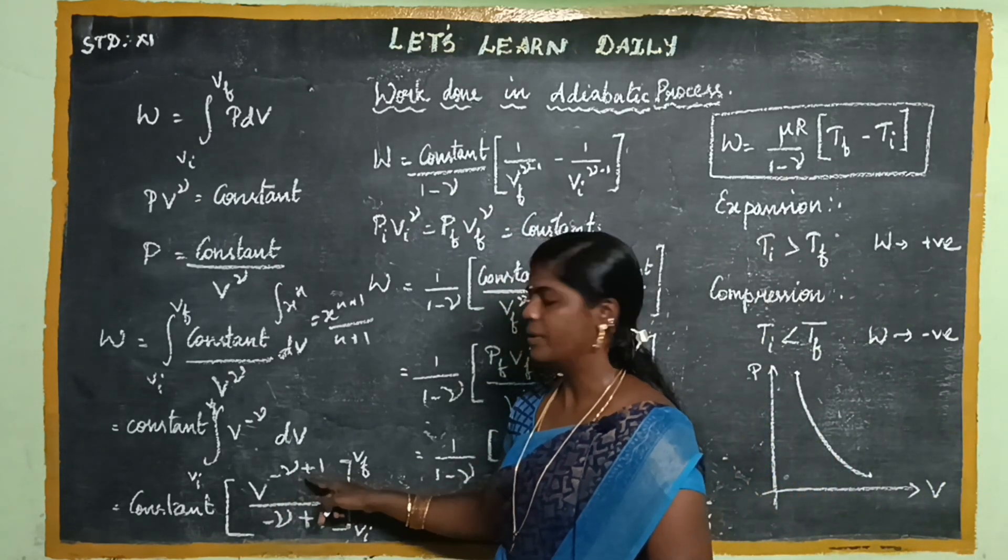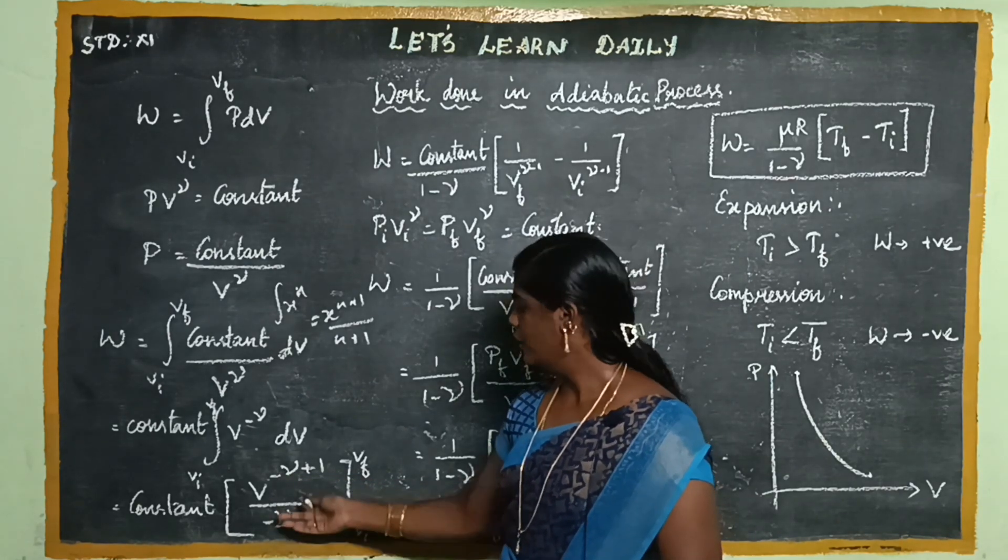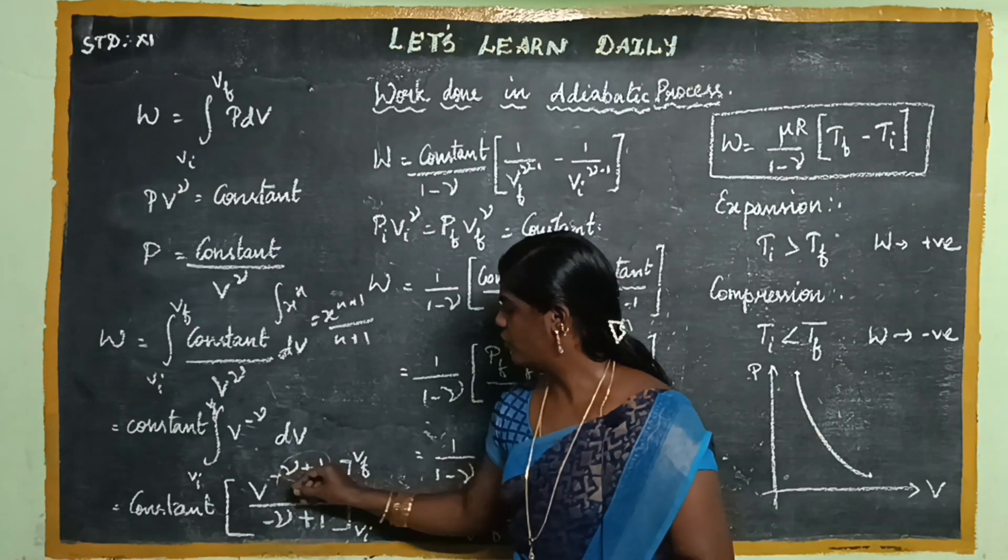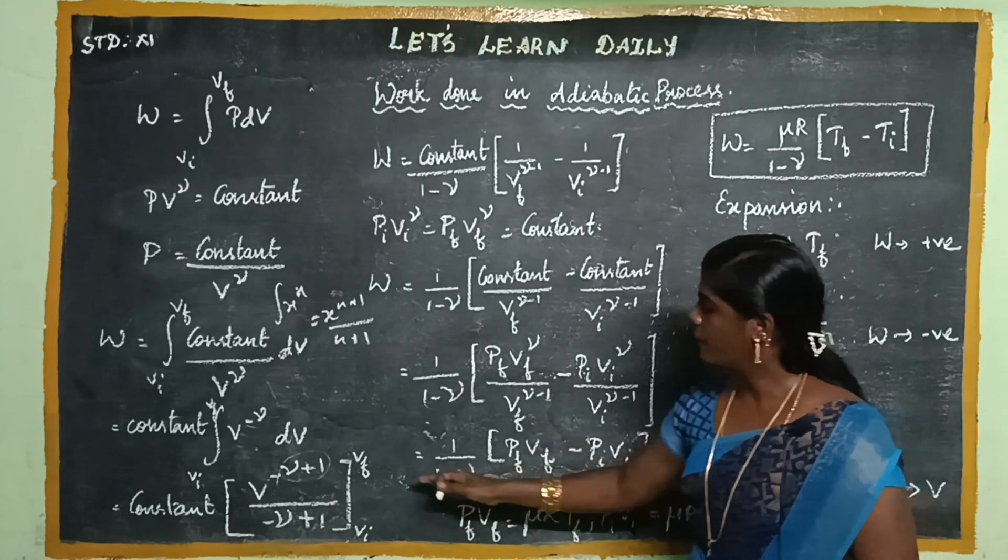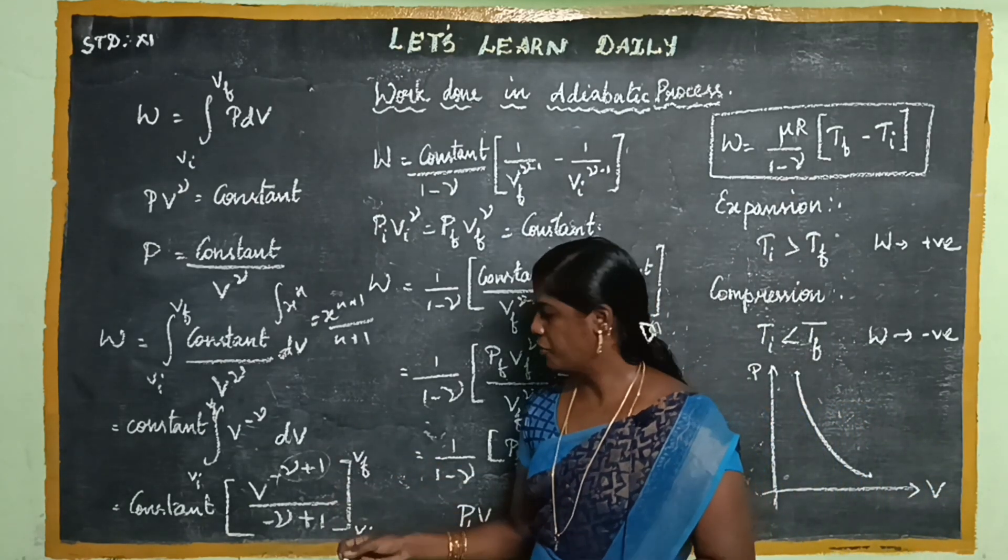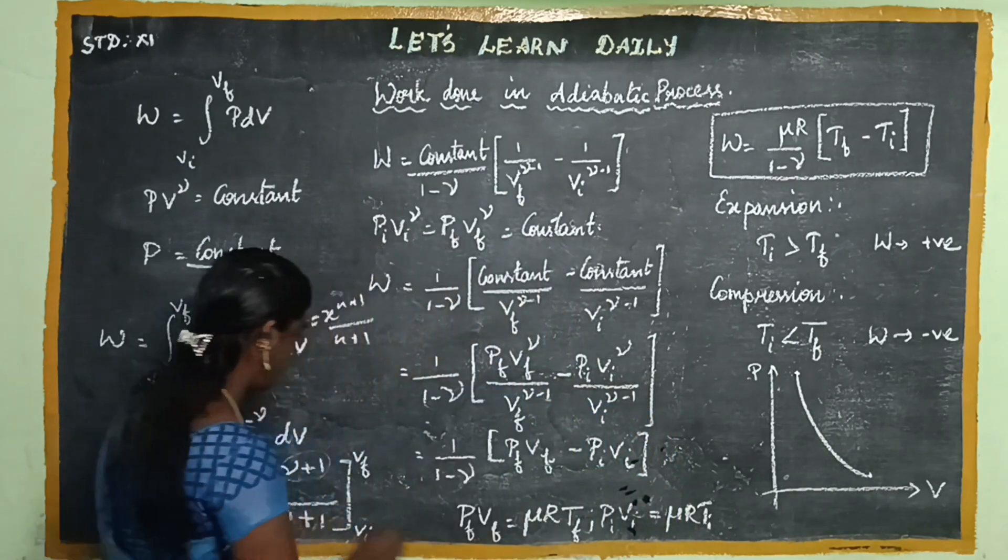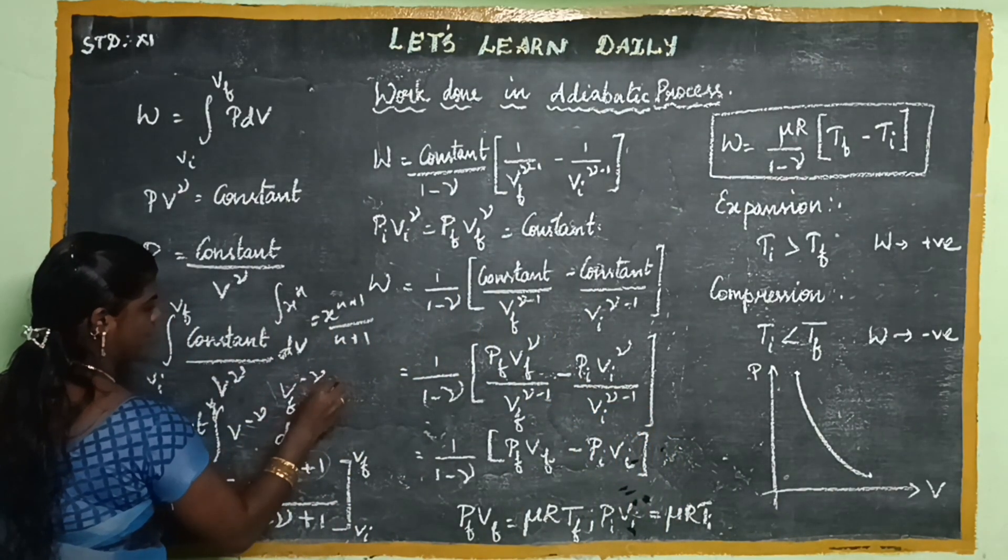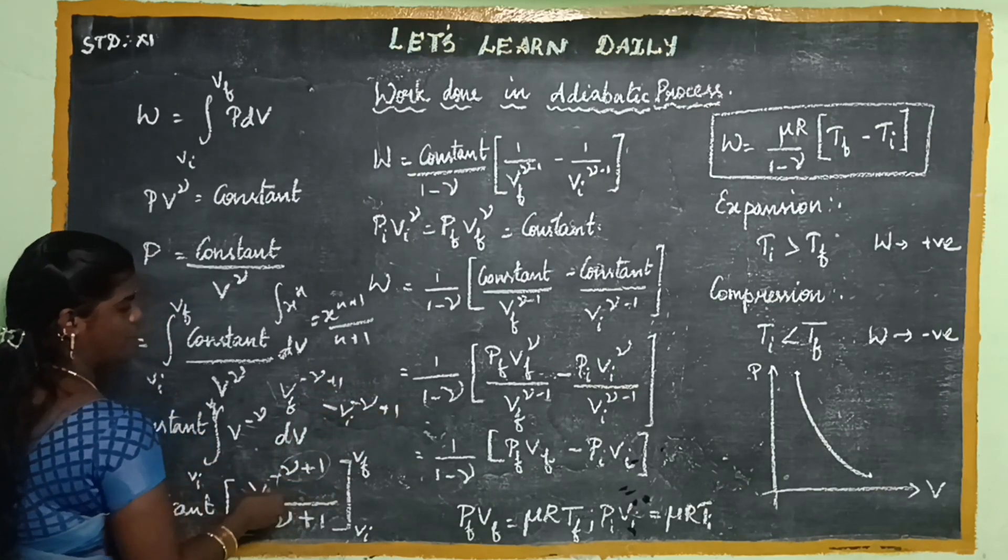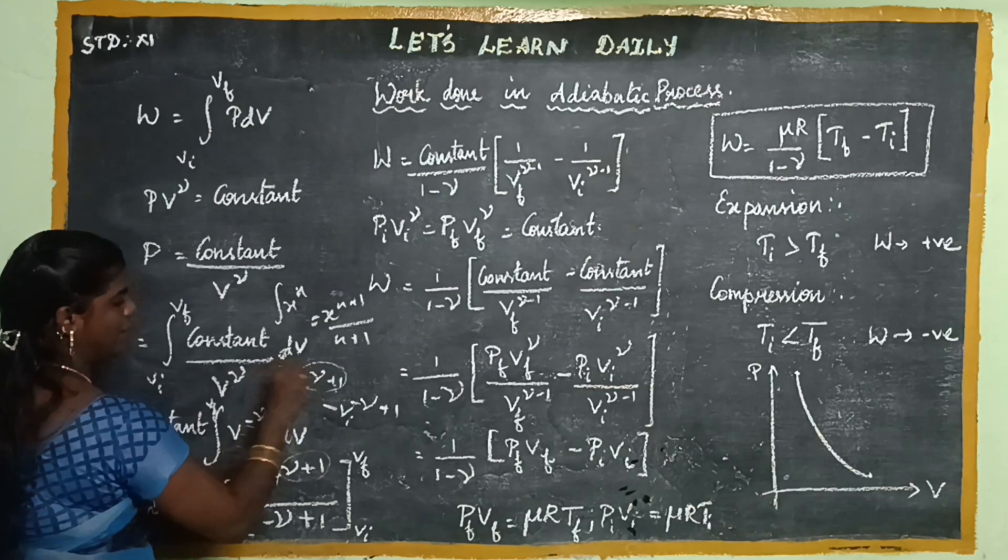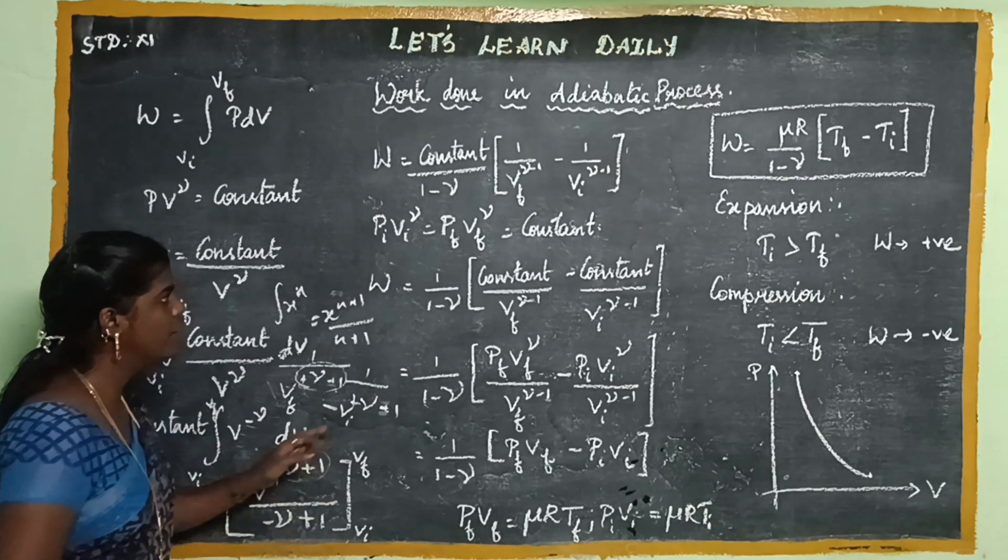We evaluate the integral and have V^(-gamma+1). When minus gamma goes to the denominator, the power changes sign. So V^(gamma-1). Then you substitute the final and initial limits, so we have VF. The result is VF^(gamma-1) minus VI^(gamma-1). So this is the term.